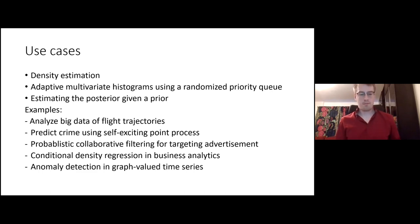Some of the real world use cases are analyzing big data of flight trade trajectories where you can make use of regular pavings to make statistics of, for example, the most popular flight routes during different weather conditions. You can also expand that to animal tracking. You can use it for predicting crime, targeting advertisements, fellowships, business analytics and anomaly detection and many more.